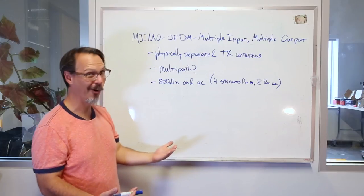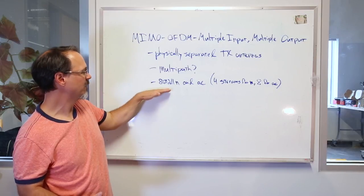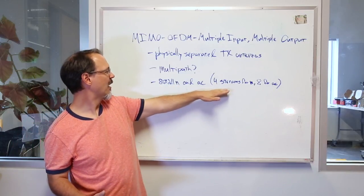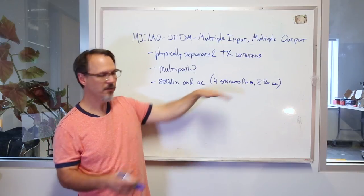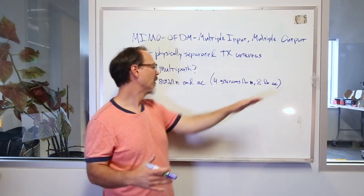I'm not exactly sure how that works. MIMO OFDM applies to 802.11 N and AC. Specifically, N has four separate streams allowed. AC has eight separate streams allowed. So AC is capable of some crazy high data rates.